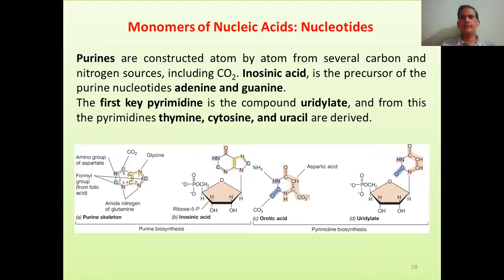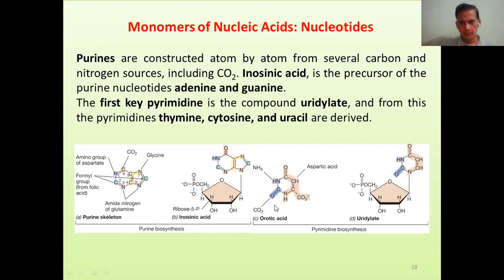For monomers of nucleic acids — nucleotide synthesis: the monomers are purines and pyrimidines. Purines are constructed atom by atom from several carbon and nitrogen sources including CO2. The primary molecule of purine synthesis is inosinic acid, which is the precursor for the synthesis of adenine and guanine. In pyrimidine synthesis, orotic acid and uridylate are key intermediates. Uridylate acts as a precursor molecule for the synthesis of thymine, cytosine, and uracil. Orotic acid is combined with the pentose sugar to form the nucleotide.